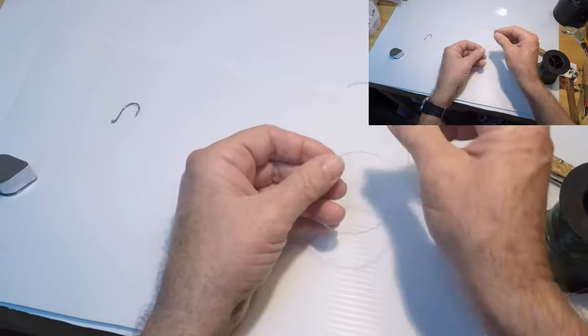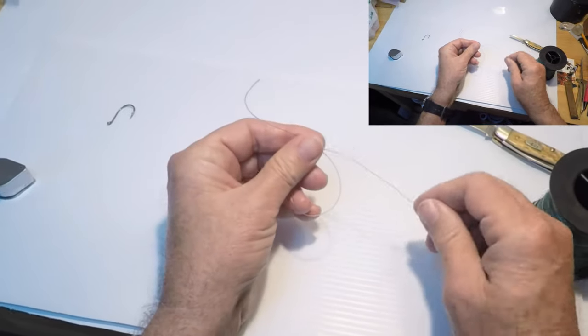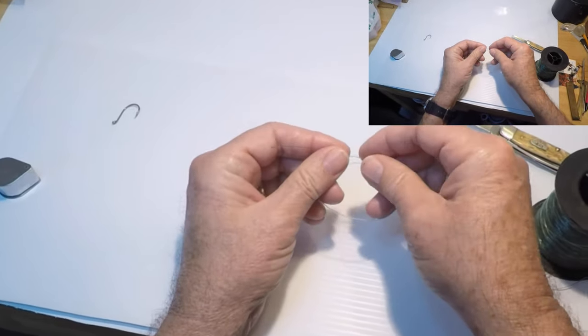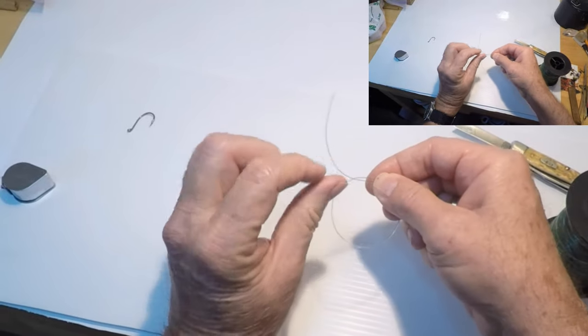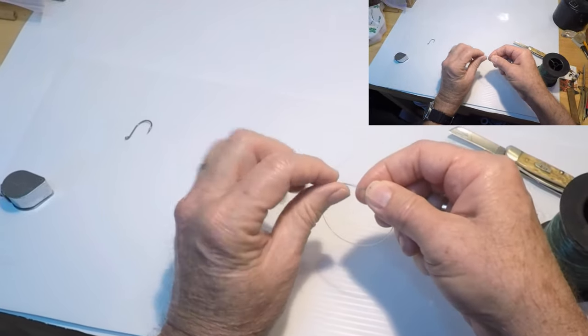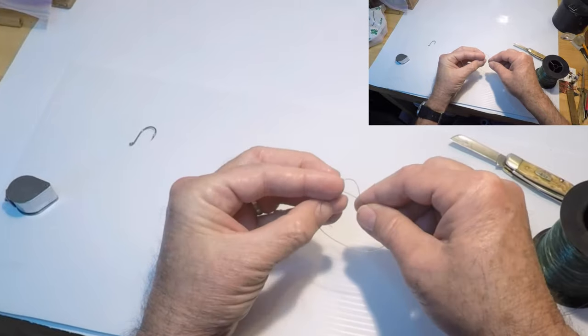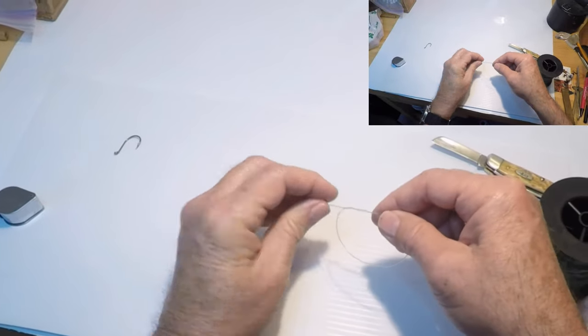We're going to begin by making a loop and then I'm going to wrap four times. Now you can wrap 29 or whatever you want but the less wraps that you make the better off you are.